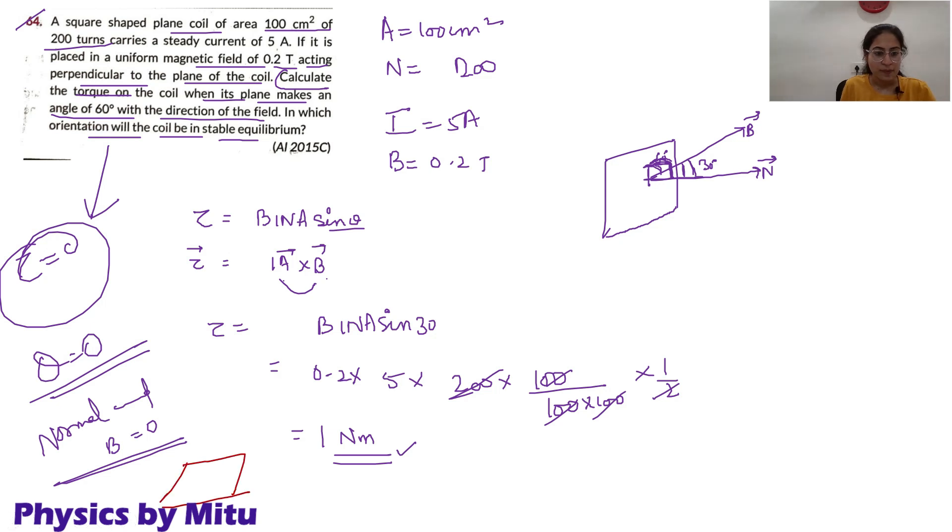Suppose this is the coil, the magnetic field is perpendicular to the plane of the coil. Normal and magnetic field are parallel vectors. In this case, the coil will be in stable equilibrium.